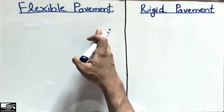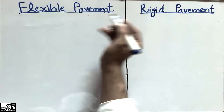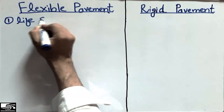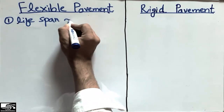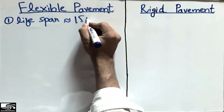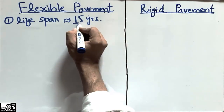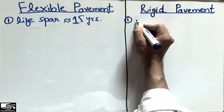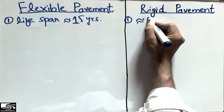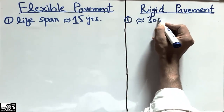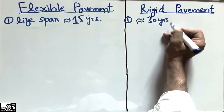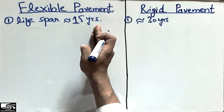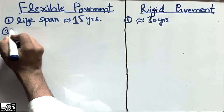The first difference is about their lifespan. The lifespan of flexible pavement is usually 15 years — they are designed for a 15-year period — while rigid pavements are designed for almost 30 years. So rigid pavements are more durable structures, while flexible pavements are less durable.